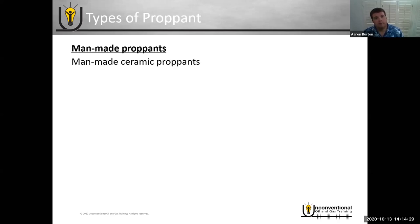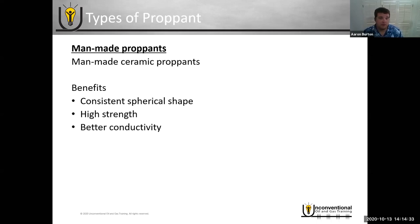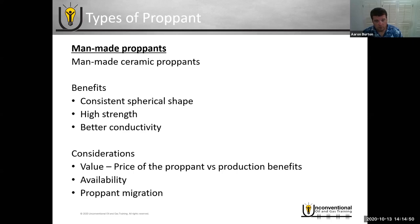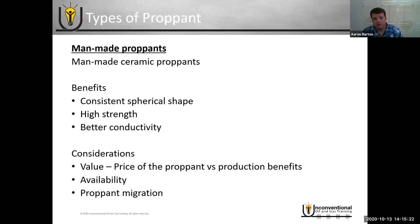For ceramic proppant, the benefits include a consistent spherical shape giving theoretically better conductivity, and higher strength — both aspects contribute to better conductivity. The consideration is value: ceramic proppants are more expensive than natural sands, so you have to justify the increased price with production benefits. Availability can also be an issue depending on timing and size, and the spherical shape tends to have more proppant migration because the smooth spheres can act like ball bearings.